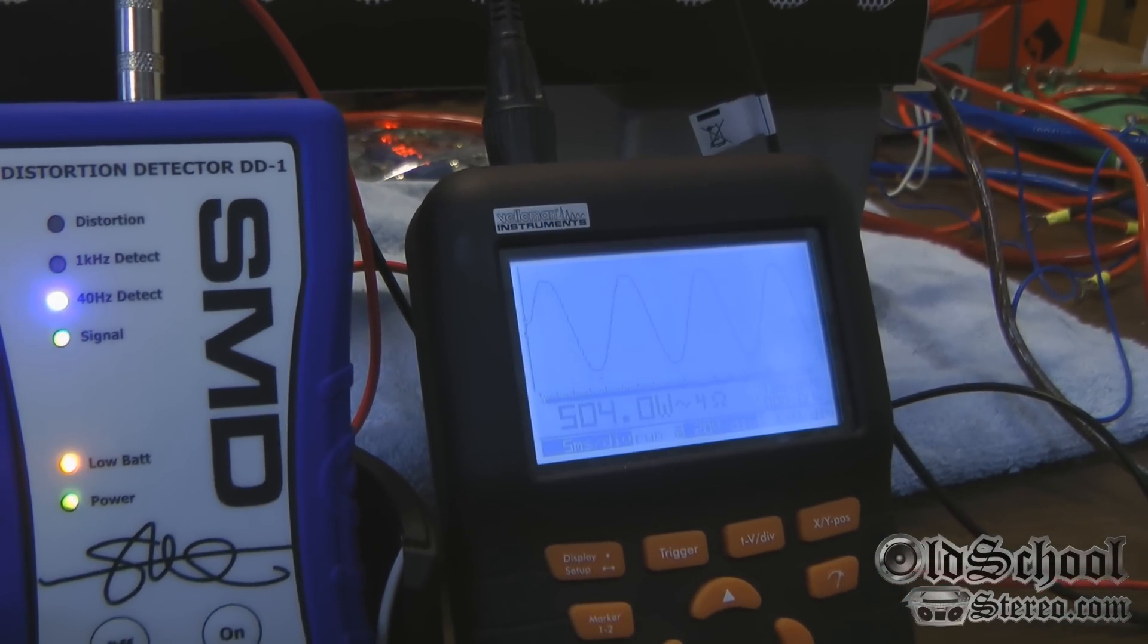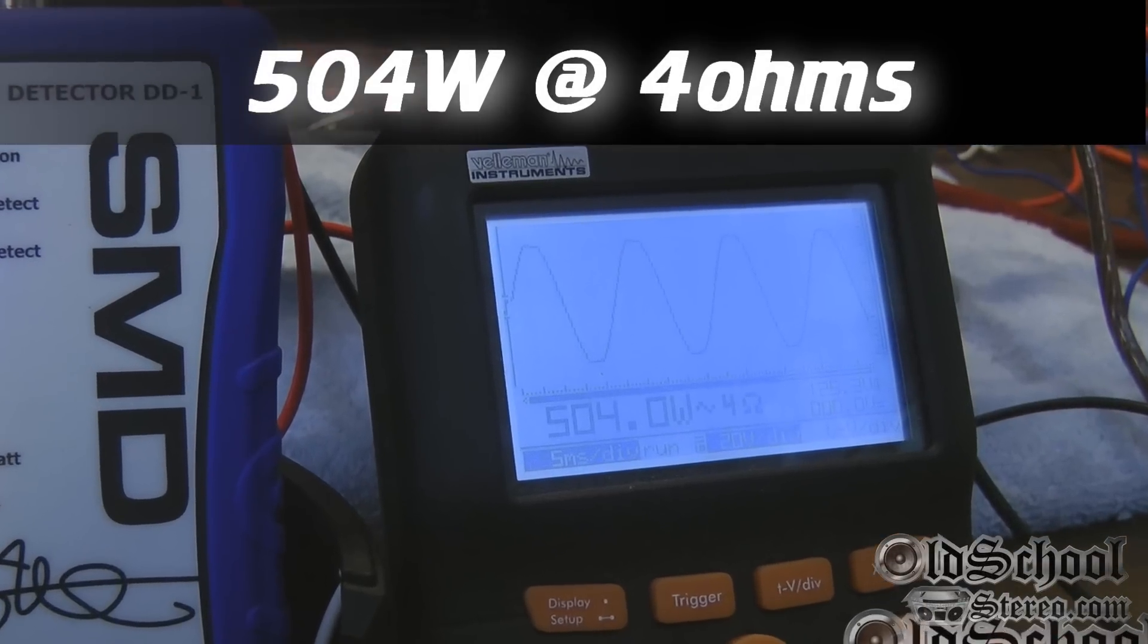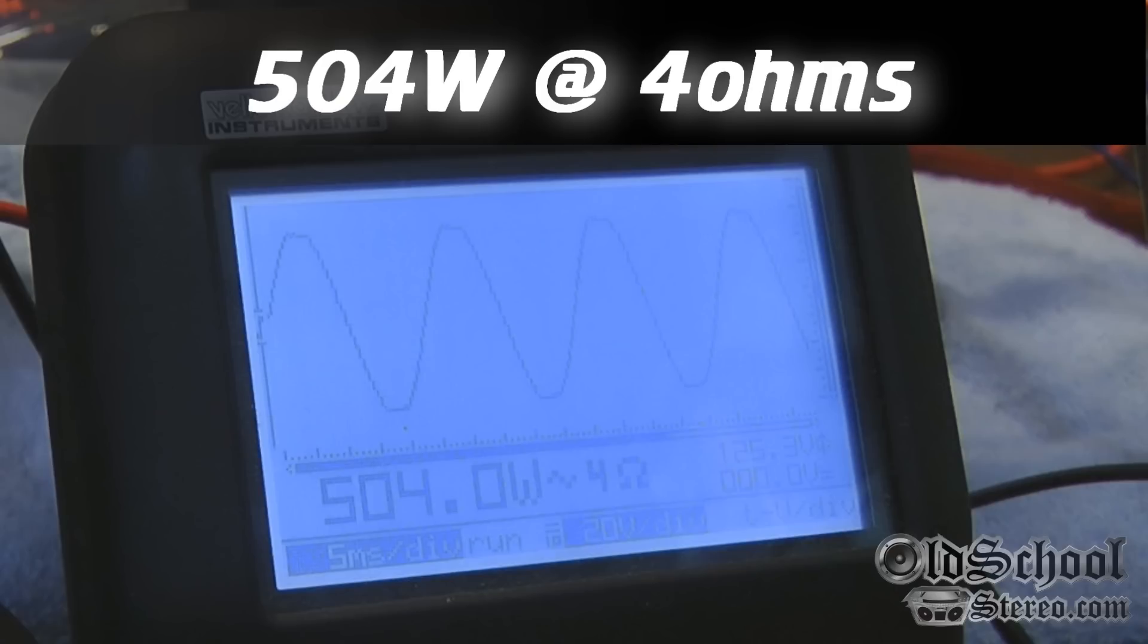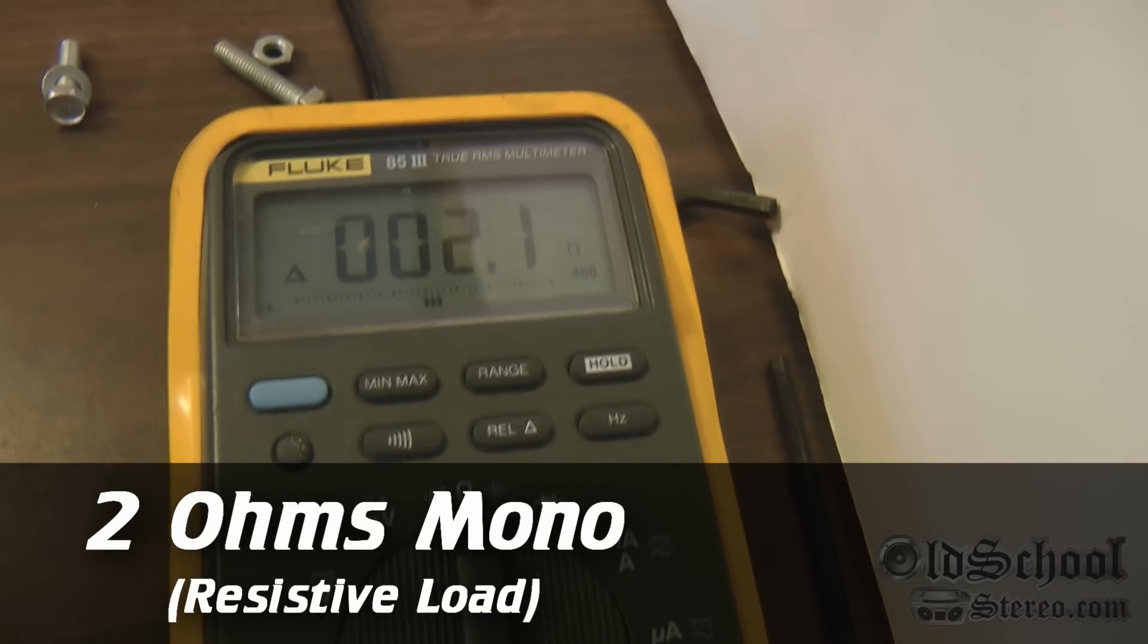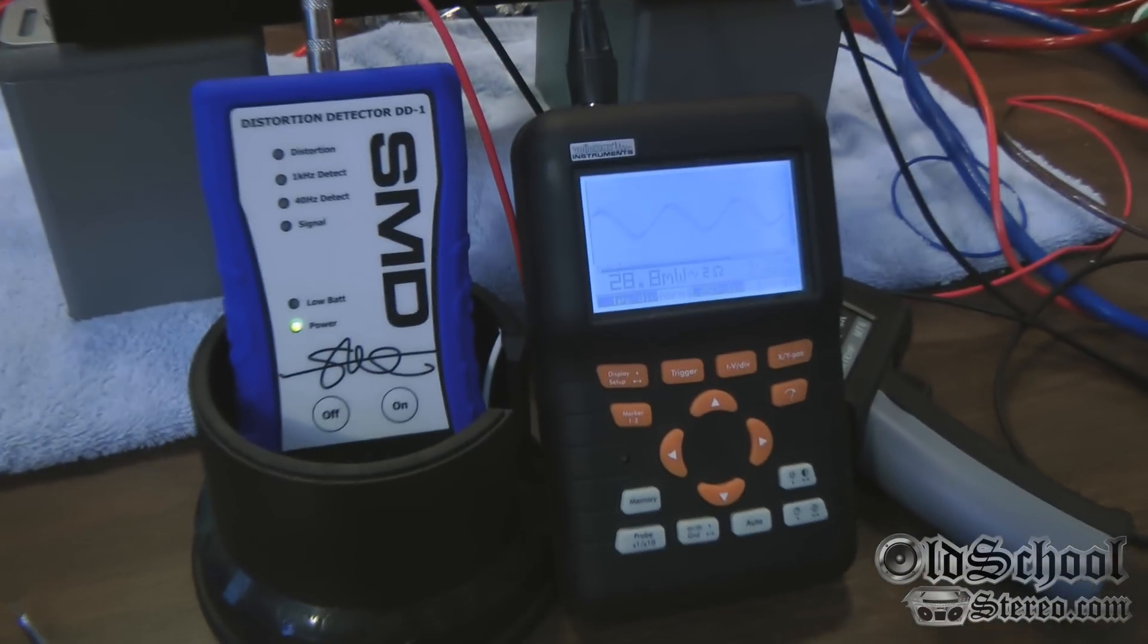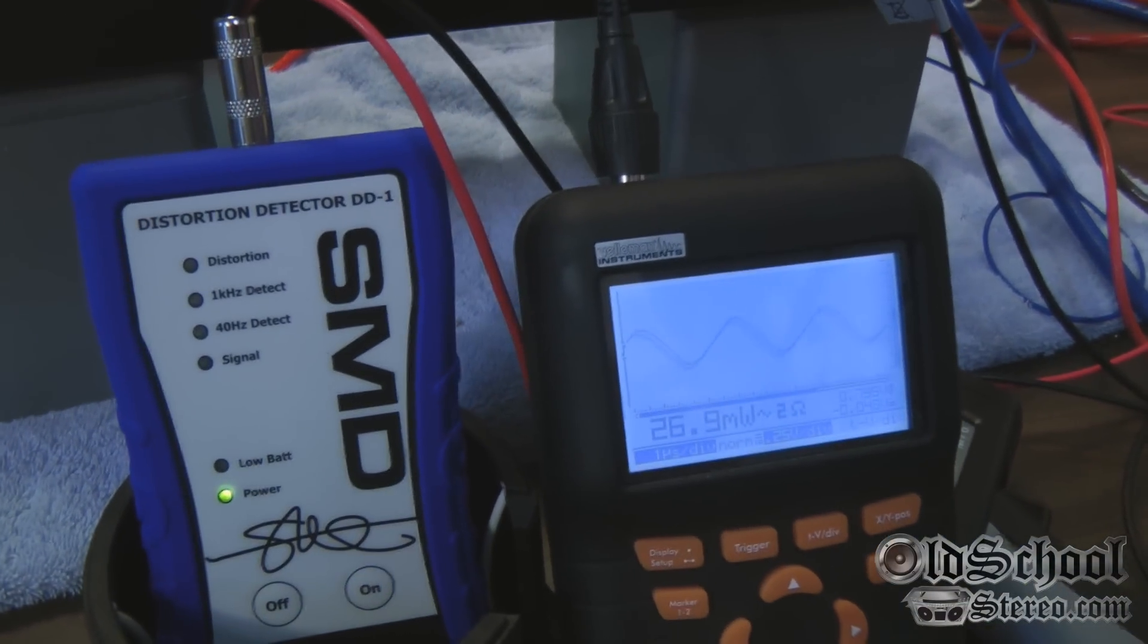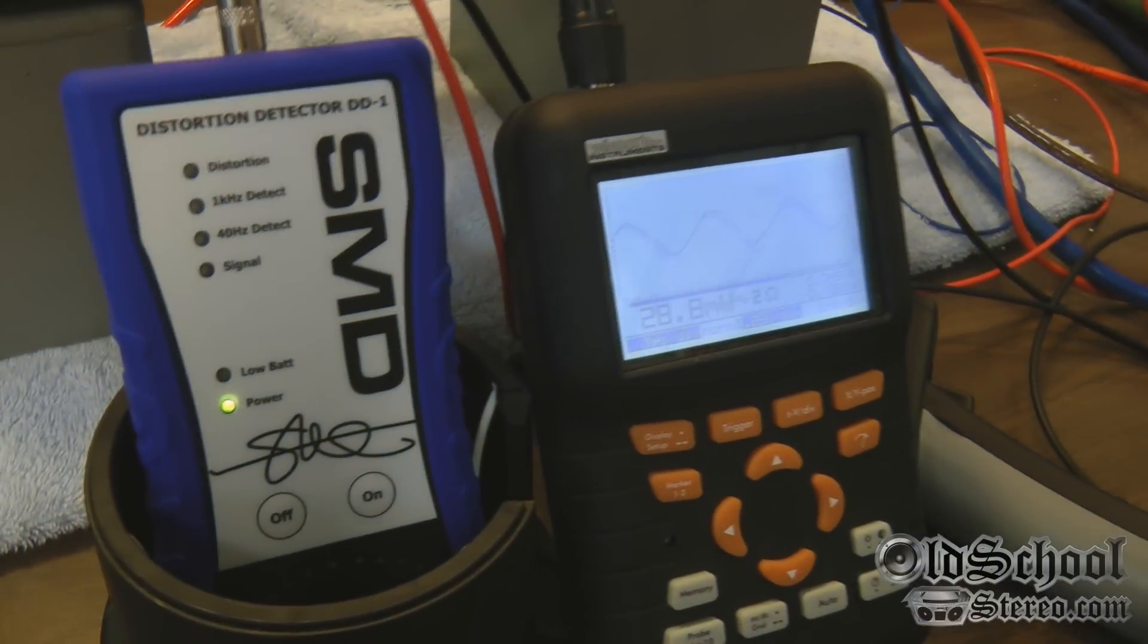A little bit underrated but 504 watts at 4 ohms. And now we have the Audiopipe AP 15001D connected at 2 ohms.